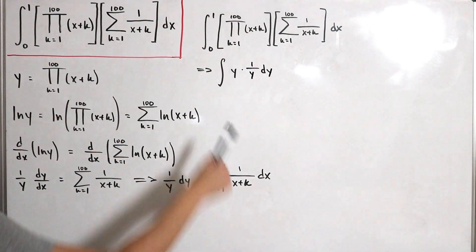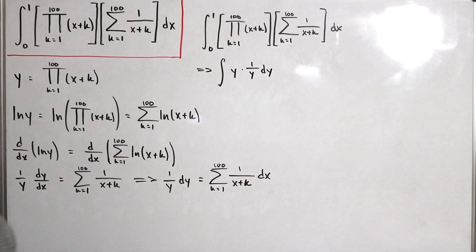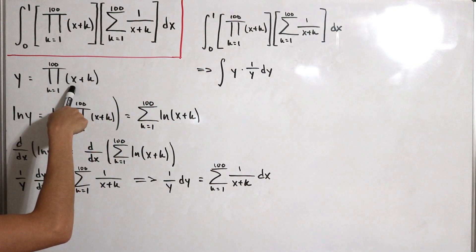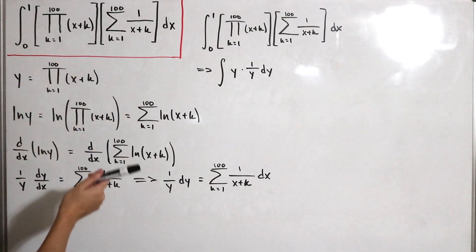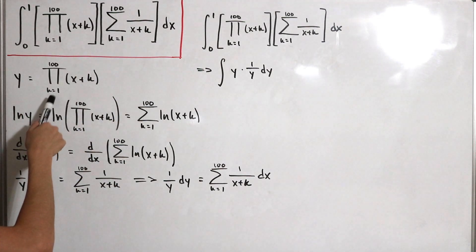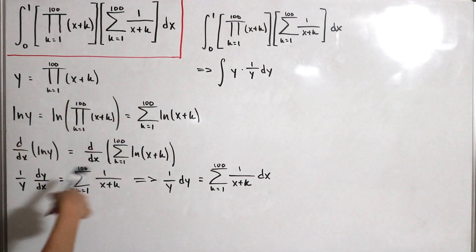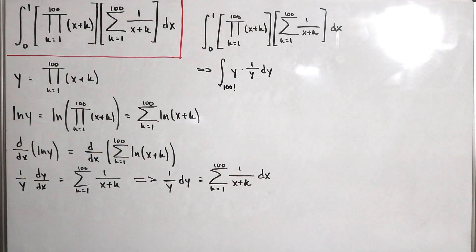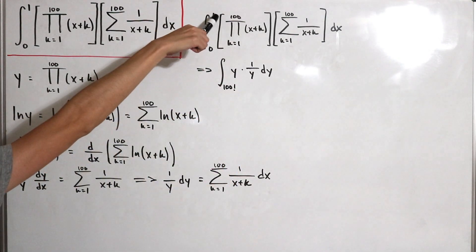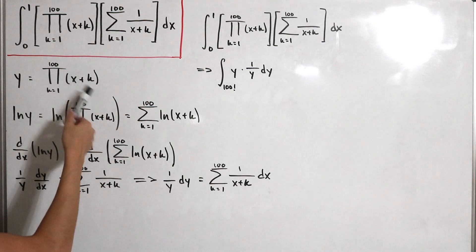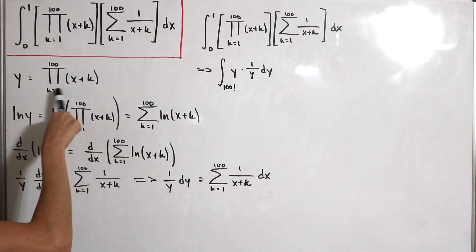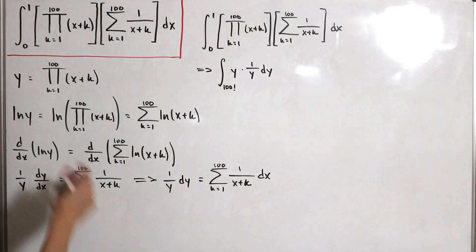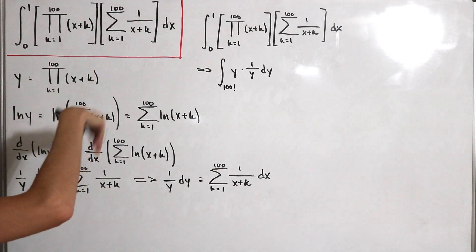We have to calculate our new bounds since we just did a change of variables. For x equals zero, we plug zero for x, so it's zero plus k. Starting with k equals 1, we get 1 times 2 times 3 times 4 all the way up to 100. In other words, that's 100 factorial on the bottom bound. For x equals 1, it's 1 plus k, so this starts at 2 times 3 times 4 times 5 times 6 all the way up to 101. In other words, this is 101 factorial.